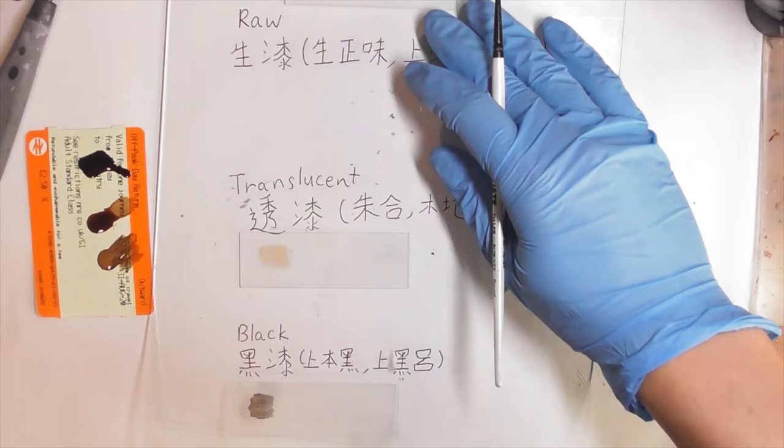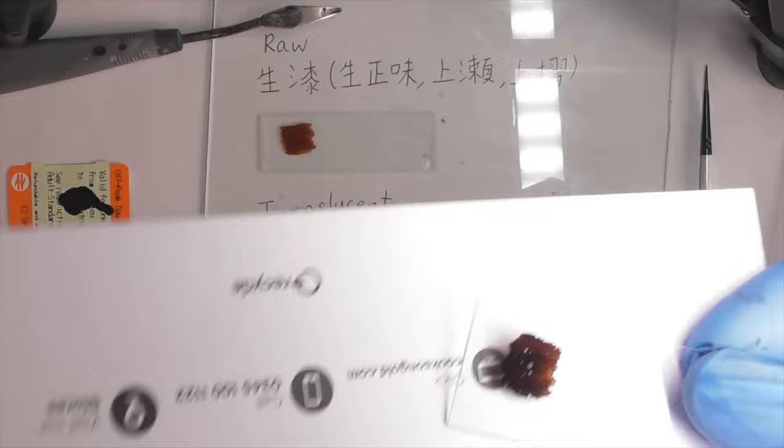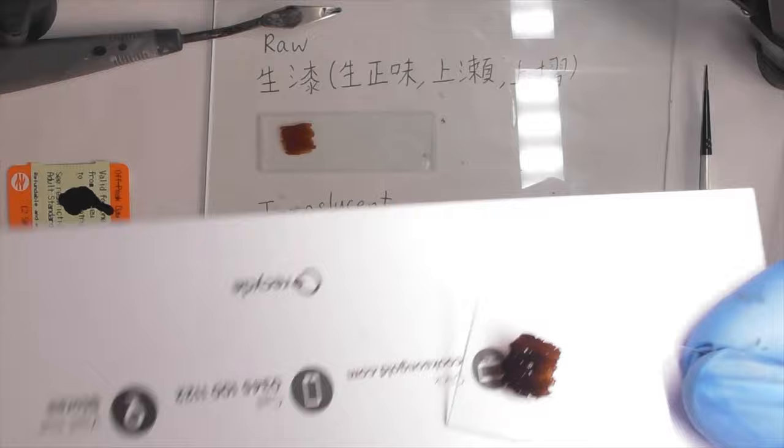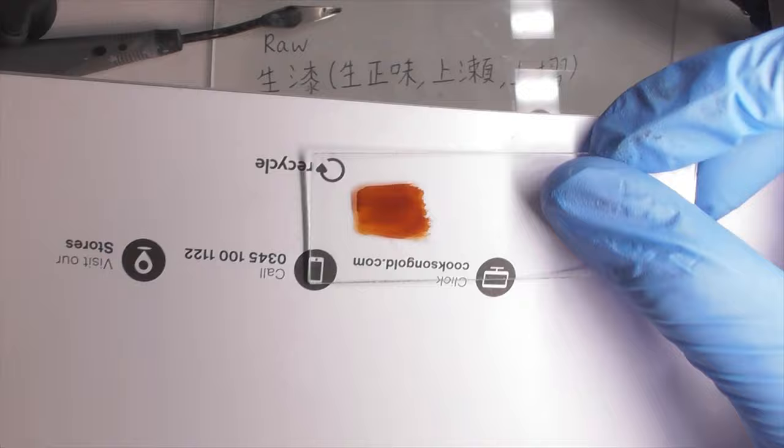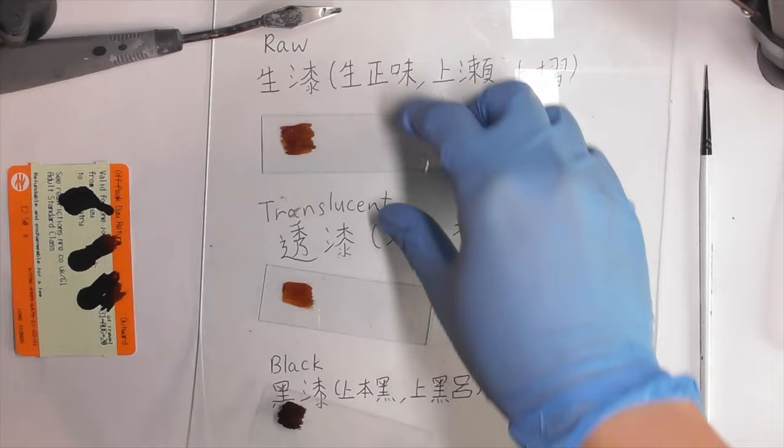The raw Urushi must be stored in fridge after use. And now let them cure at 20 degrees Celsius and 90% humidity for three hours. The Urushi will gain a deeper brown color after the curing process.